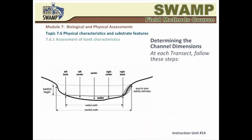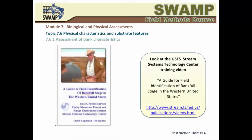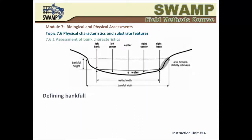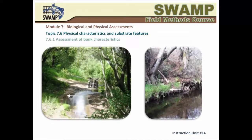This topic describes the assessment of physical characteristics within the stream channel, including banks, channel dimensions, and substrate. The assessments are done after all the biological samples have been collected and fully processed. Bankfull height and width are measured at the channel cross-section of each transect. Bankfull is the zone of maximum water inundation in a normal flow year — one- to two-year flood events. Identifying bankfull height takes careful observation and intense training, and you are encouraged to view the U.S. Forest Service guidance video on this subject. Bankfull has been defined by Professor Luna Leopold as the stage at which water starts to flow over the floodplain. In practice, you learn to look for the first flat area of deposition above the wetted channel.